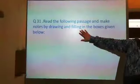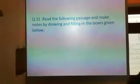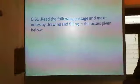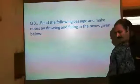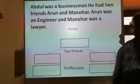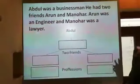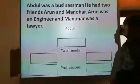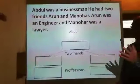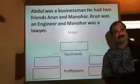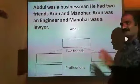Question 31 is reserved for note-making. What is it? Note-making: read the following passage and make notes by drawing and filling the boxes given below. Let's see an example. Abdul was a businessman. He had two friends, Arun and Manohar. Arun was an engineer and Manohar was a lawyer. It's a very small example which I have given you here.